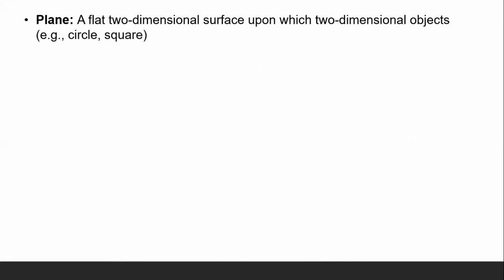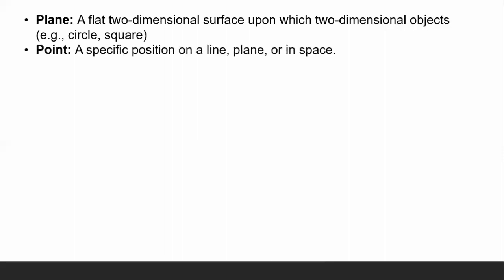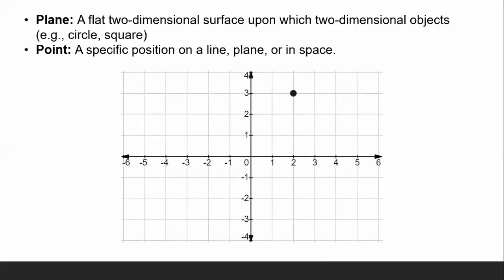Plane is a flat two-dimensional surface upon which two-dimensional objects exist. Examples of plane figures include circle, square, rectangle, parallelogram, and oval. Next, point refers to a specific position on a line, on a plane, or in space. For example, on a Cartesian plane, the ordered pair (2, 3) marks a specific given point.